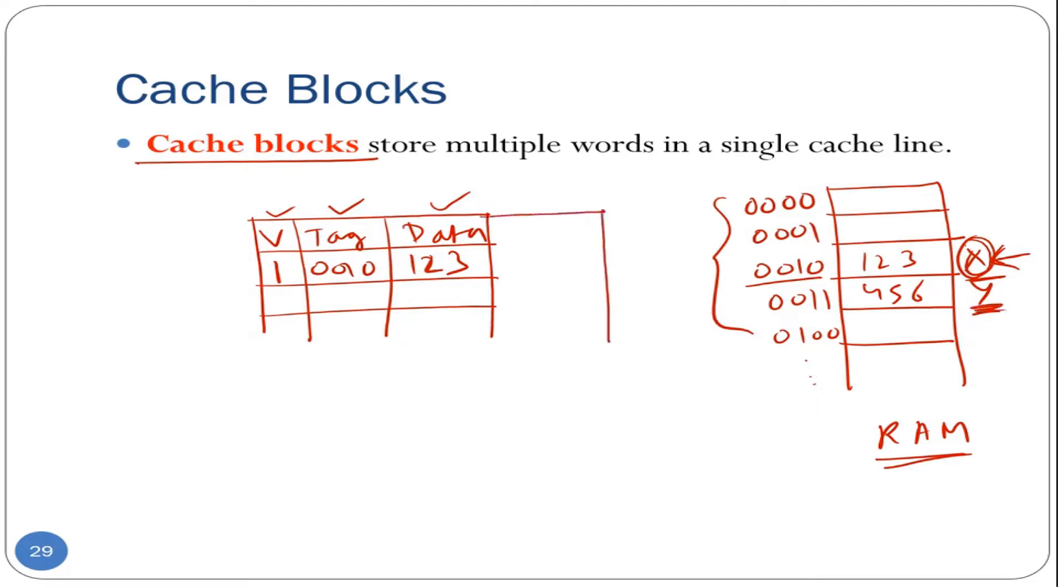So our cache is now going to expand. Instead of storing just one data item in every row, we will store, let's say two data items. So each row is now a cache block that can store multiple words in a single cache line or cache row. So the value of this variable Y would be stored adjacent to that of X here in the same row. So we have 456 here now.